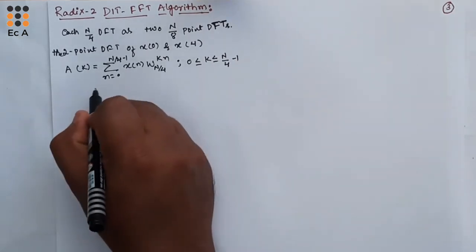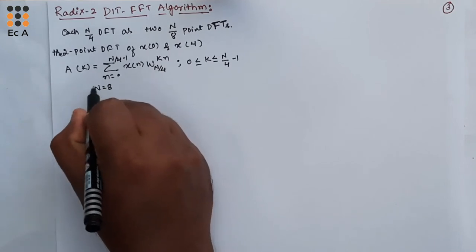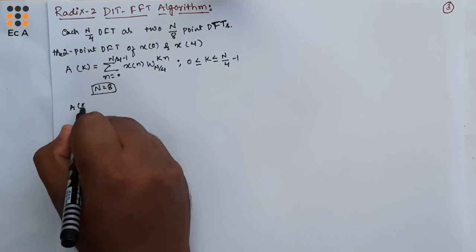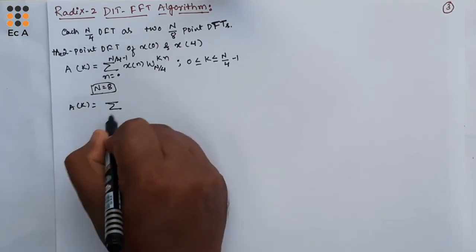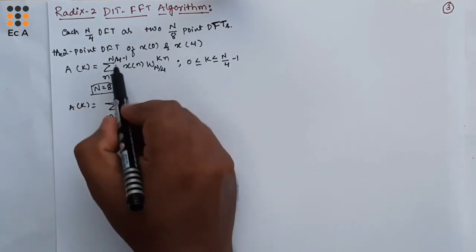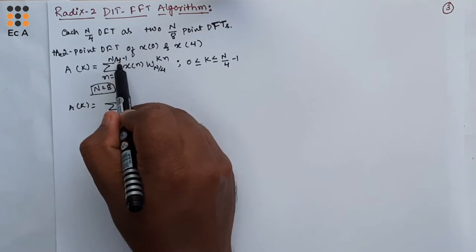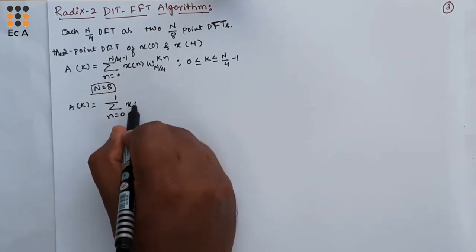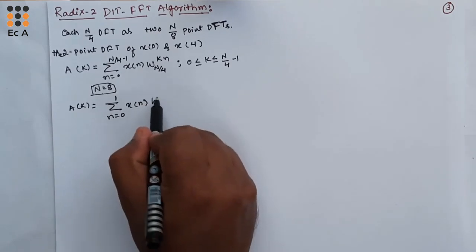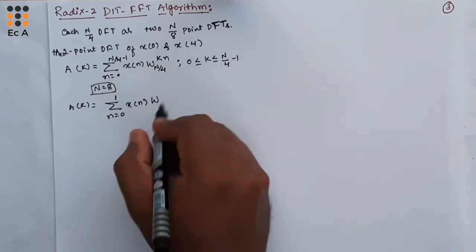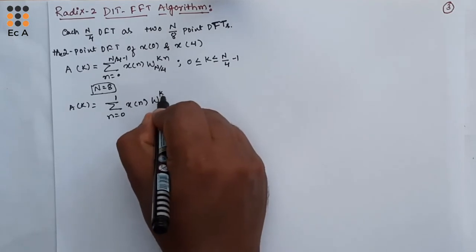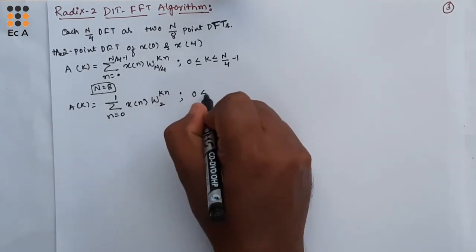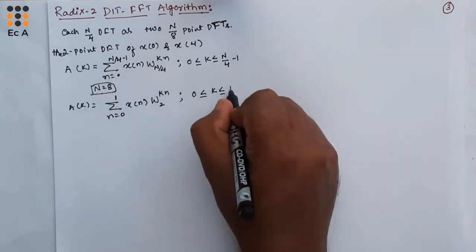In this example, we have taken N equal to 8. If we take N equal to 8, we can write the above equation as a(k) equal to summation of n from 0 to 1 of x(n) times W_2^{kn}, for k ranging from 0 to 1, since 8/4 equals 2 and 2 minus 1 equals 1.